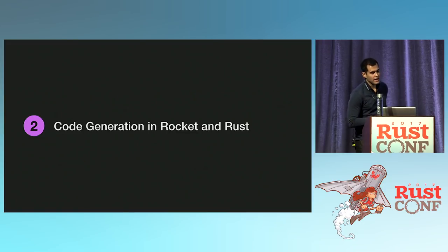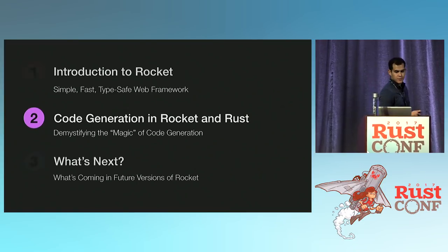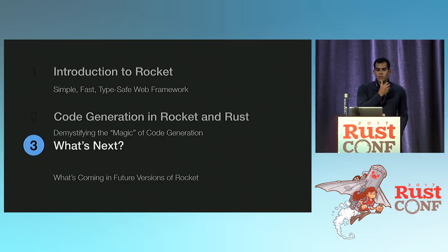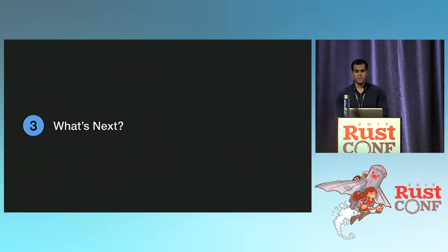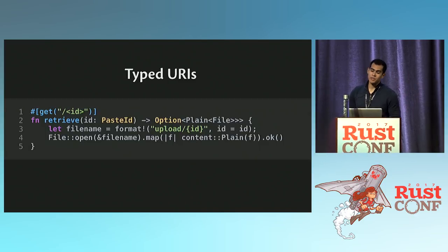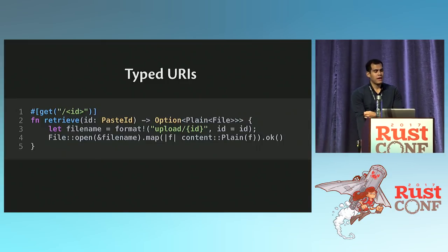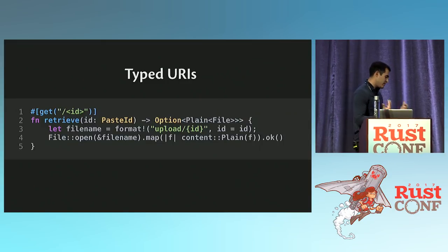That is code generation in Rocket and Rust. So what's next? We're going to keep using code generation, as you might imagine. We're going to do typed URIs — for the next release of Rocket, I really want to have typed URIs.